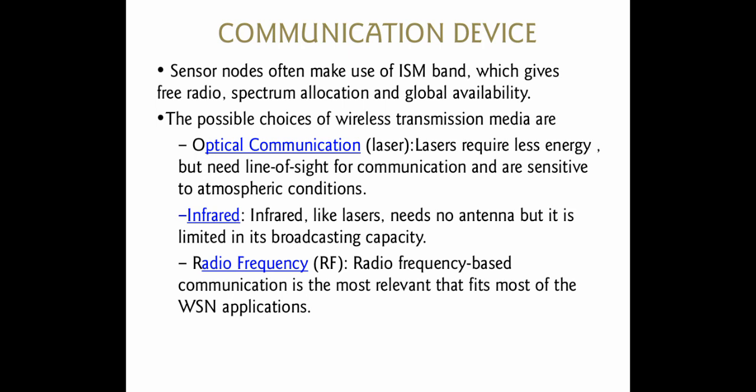When one node acts as a transmitter, the next node receives the information from the transmitter. In that case, the communication device must have both a transmitter and a receiver — that is why it is called a transceiver. It converts one form of signal into another signal. There are three types of transmission media: optical, infrared, and radio frequency.